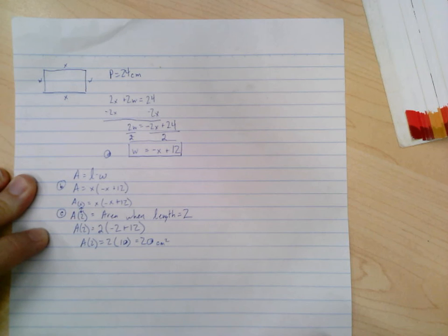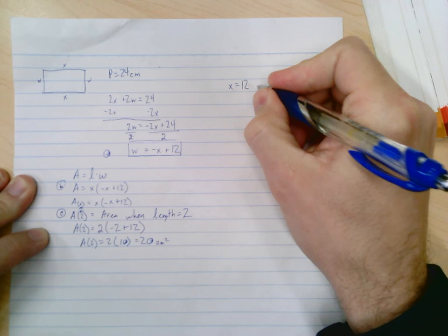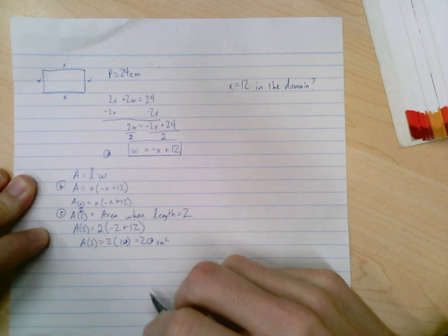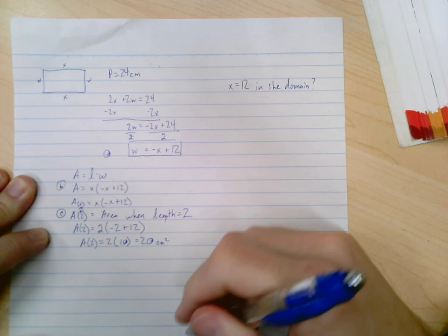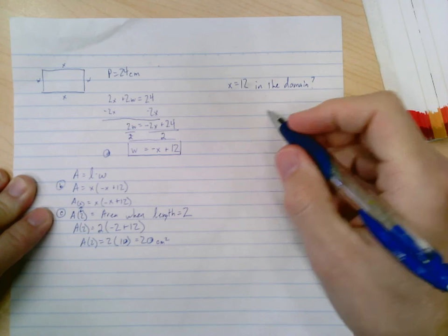Pretty nice. Let's move on to part d. Part d says is x equals 12 in the domain? Now there's two ways that you can work through this. One of them is to just go ahead and put the number into the function and see if it works. Okay, but before we do that, let's talk about it.